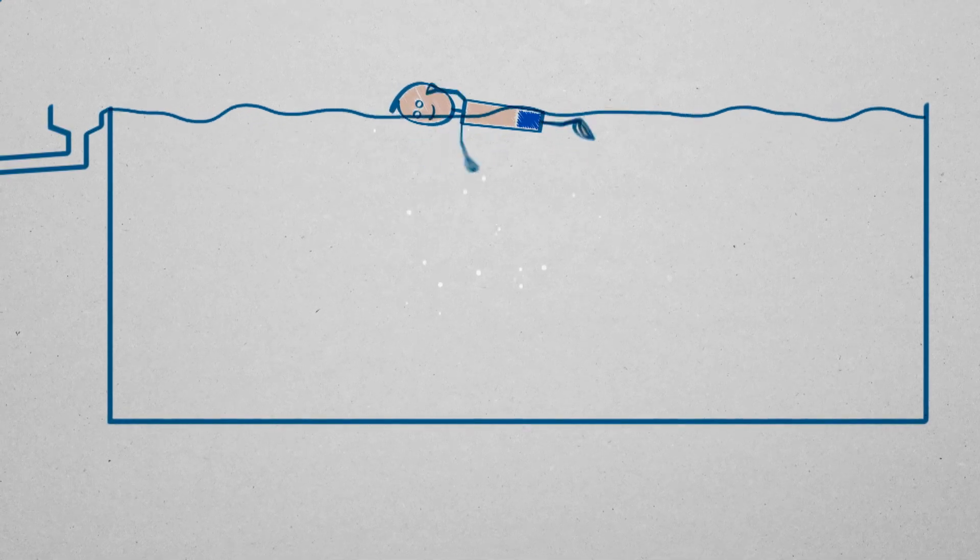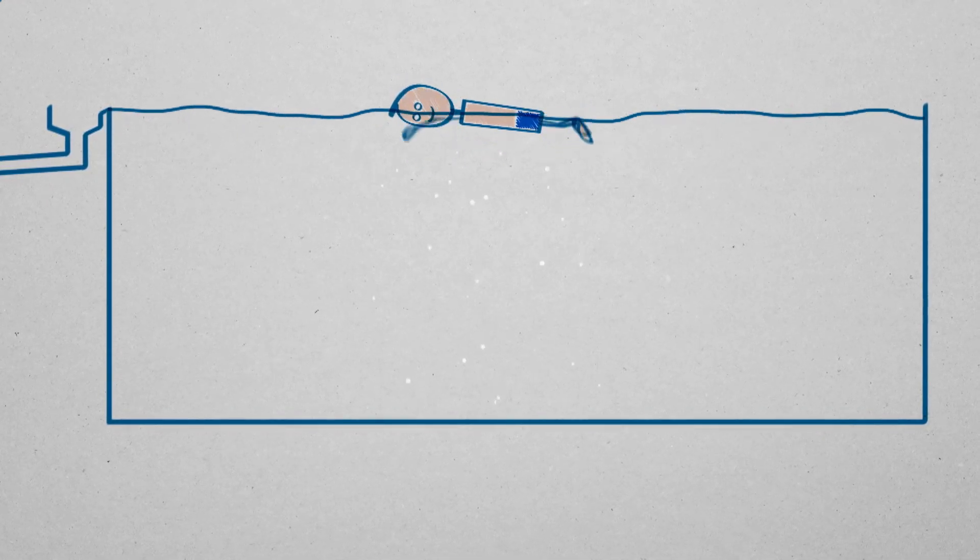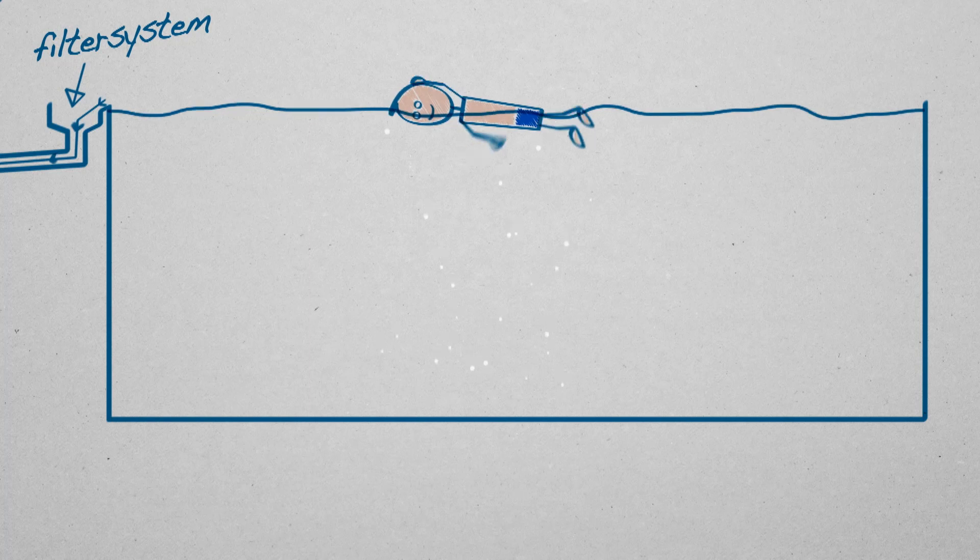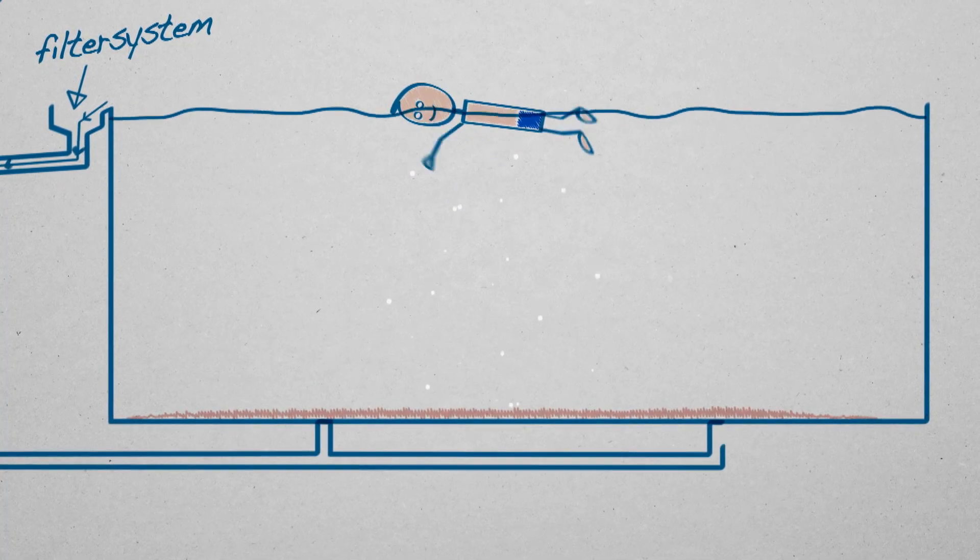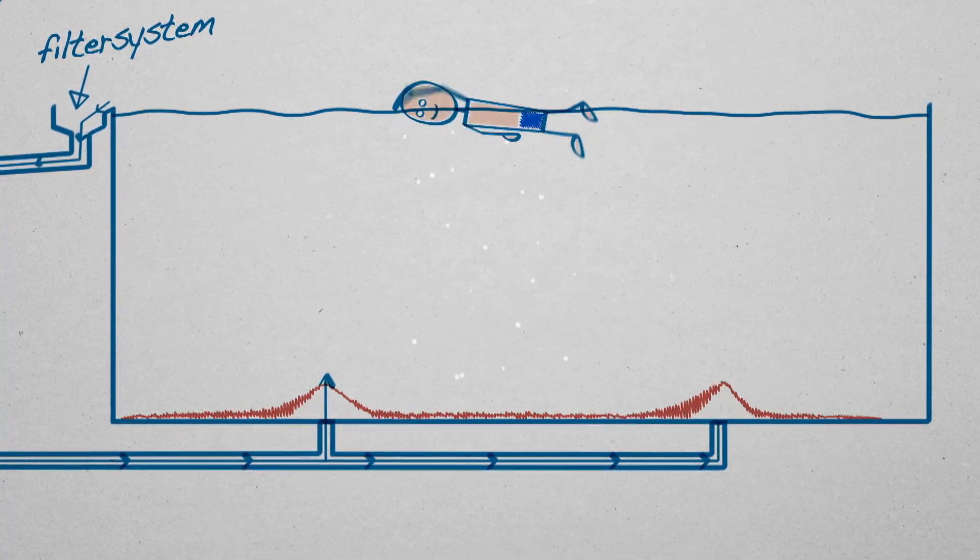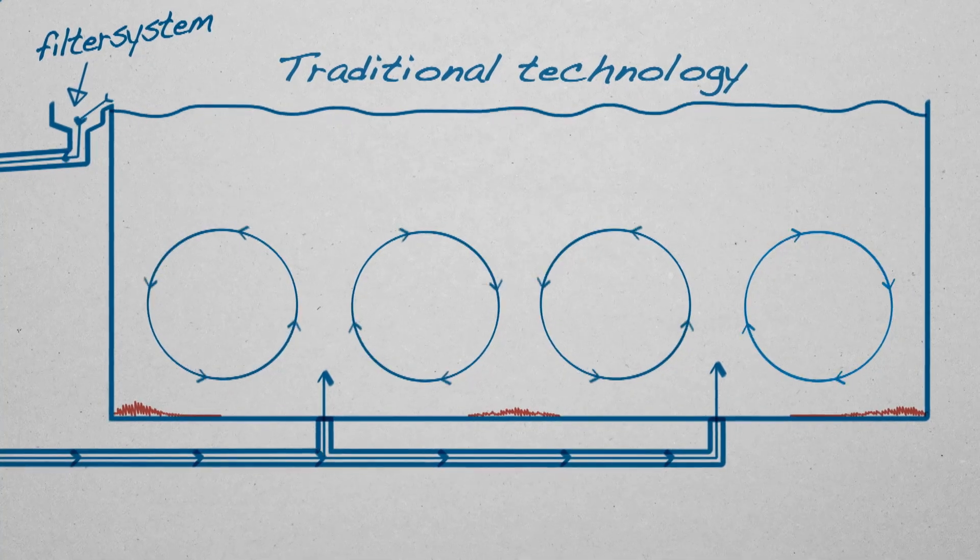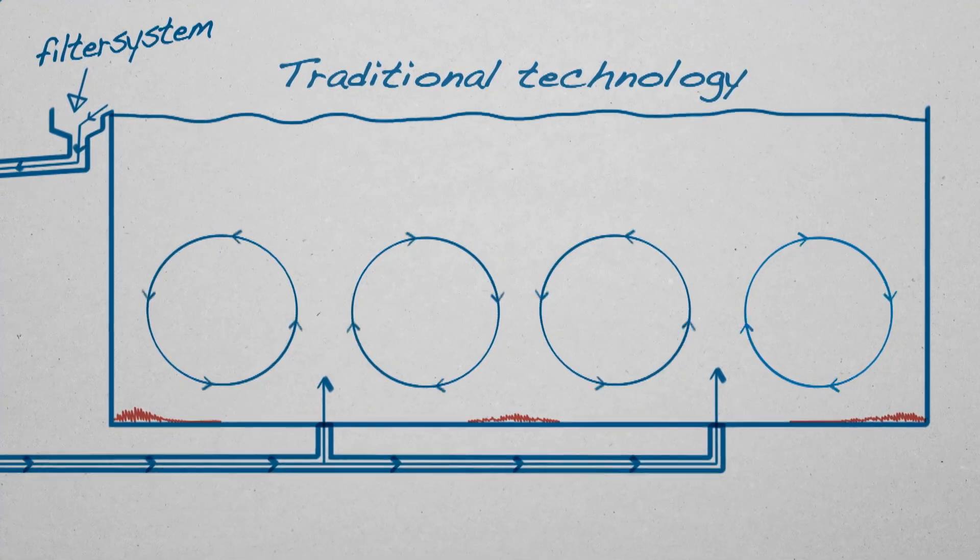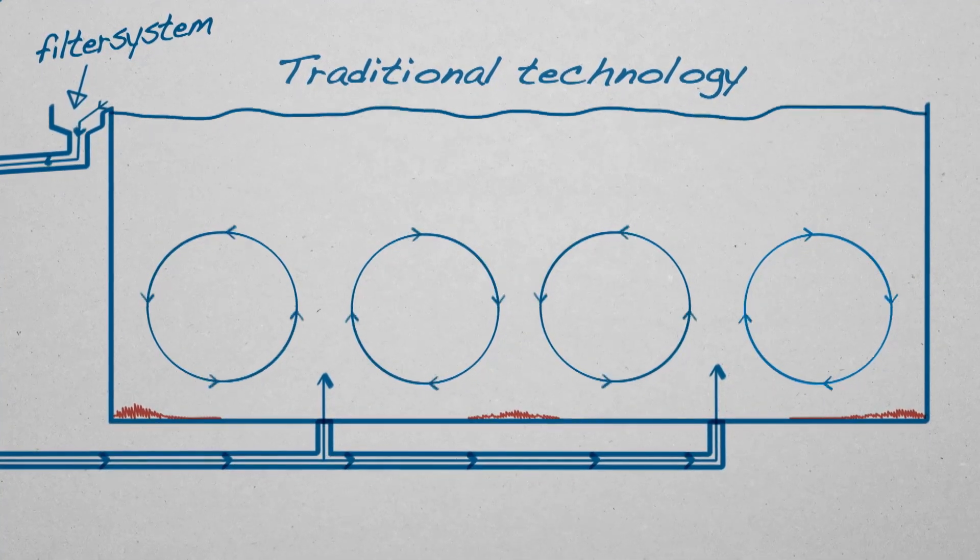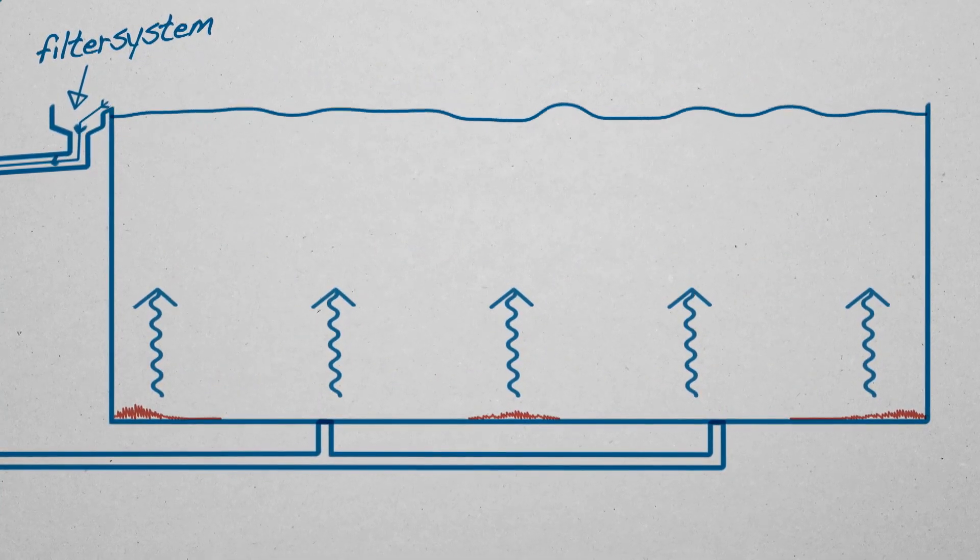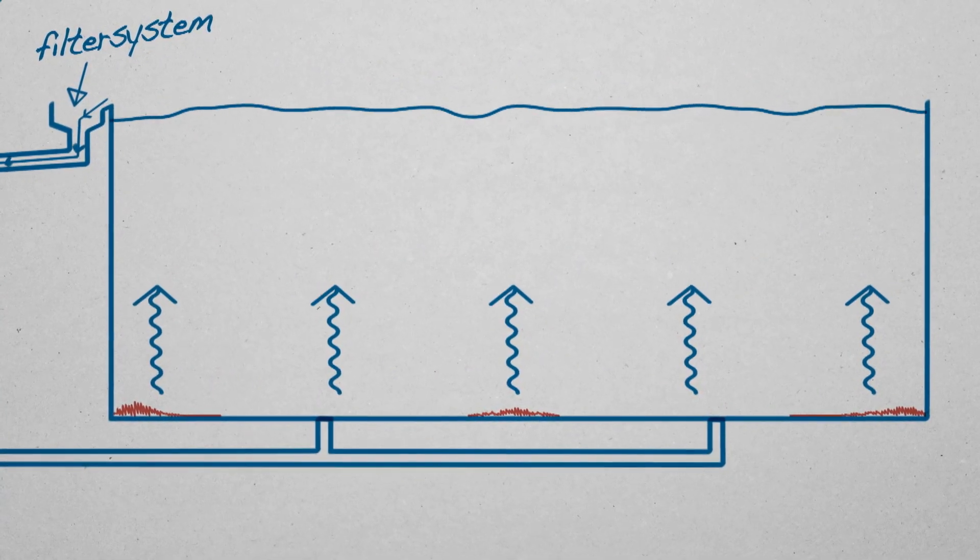First, we need to get human skin cells, sweat, and urine transported from the pool to our revolutionary filter systems quickly and efficiently. One of the problems with traditional swimming pool design is that a large portion of particles, such as skin cells, settle on the pool floor. These particles dissolve continuously when combined with chlorine and result in the traditional swimming pool smell and undesirable health effects.